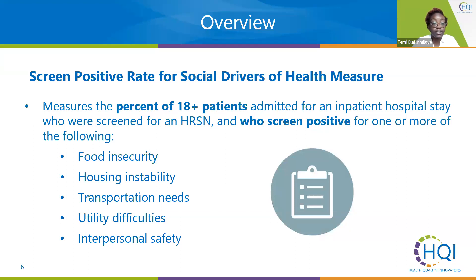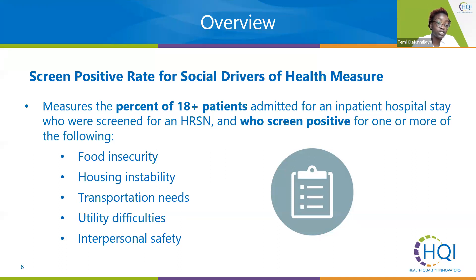The next measure is the screen positive rate for social drivers of health. This looks at patients 18 and over who were admitted for an inpatient hospital stay, screened for the HRSNs, and were positive for one of the five HRSNs. Quite similar to the last measure, but this time really focusing on how many patients actually screened positive for these social needs.